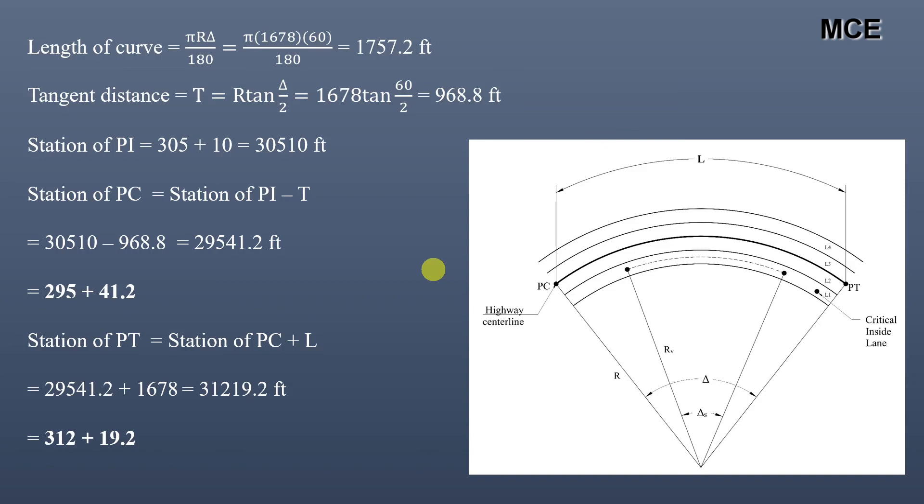We calculated the radius of the horizontal curve centerline and found the stations of PC and PT. Hope you found this video helpful. If you liked it, subscribe to my channel and share this video.